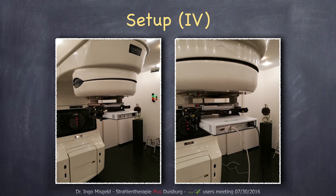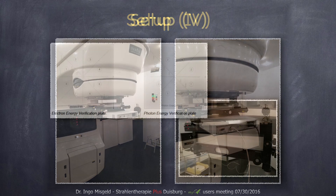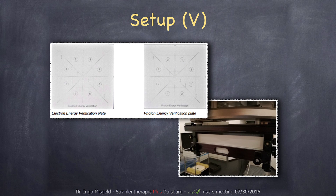For measuring the absolute dose, depth dose, and profiles there are two additional plates: the energy verification plate and the photon verification plate, which have to be put onto the detector. Each of these plates has different metal absorbers — eight for the electron verification plate and two times four for the photon verification plate. You can also see indicated on the plates the lines or detectors where the profiles are measured: cross-line profile, inline profile, and diagonal profiles.